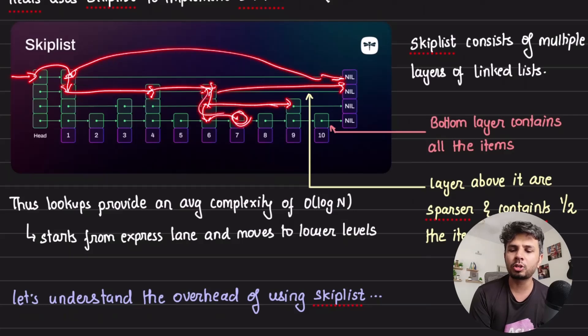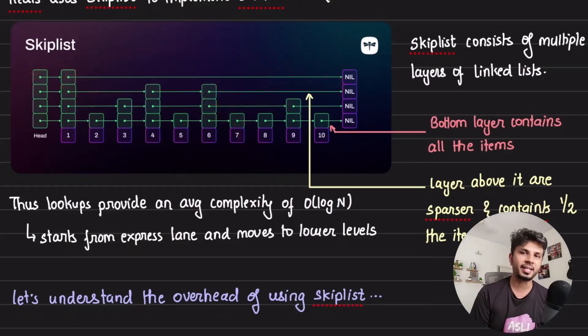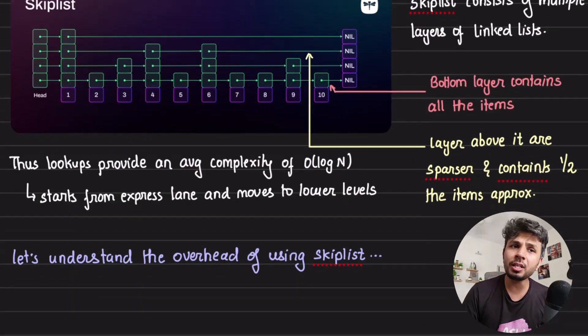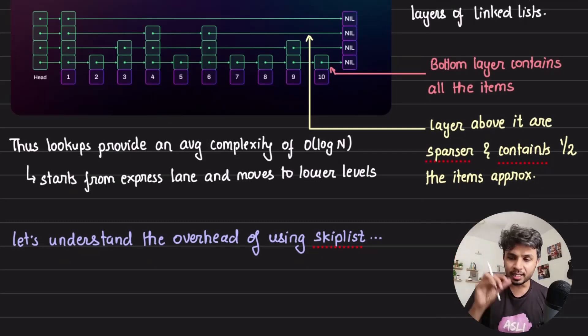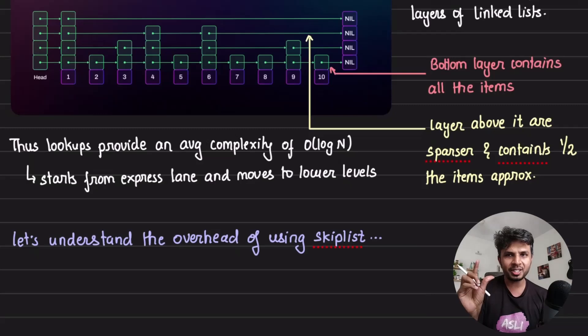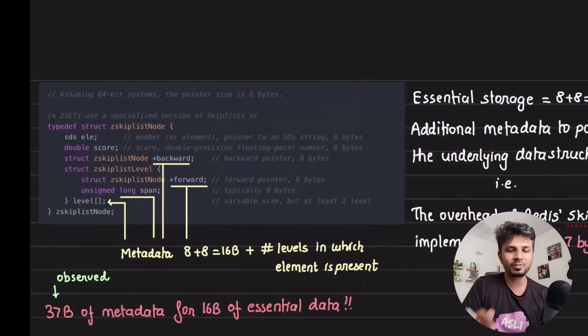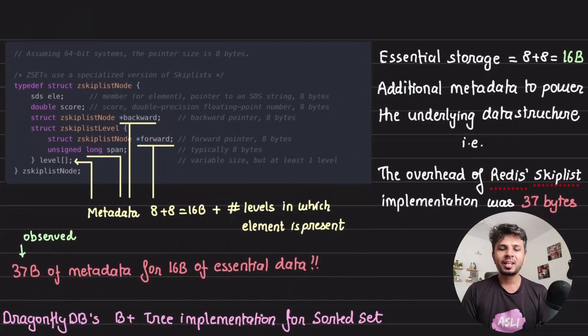In almost log(n) lookups, I reach the element I intended to. This is the whole idea of skip list implementation. There is an overhead to it. Let's compute it. The video is going to have a bit of calculations, but it will be fun. You'll see how data structures need to be optimized for every single byte overhead.